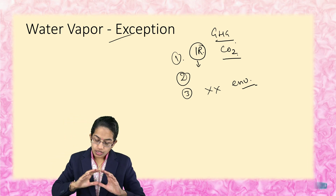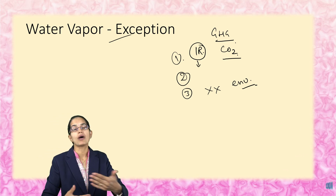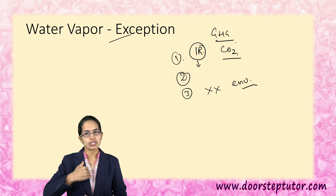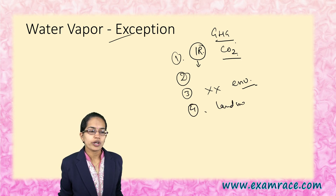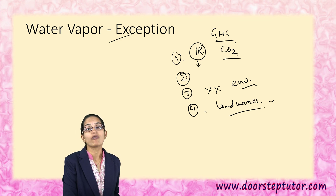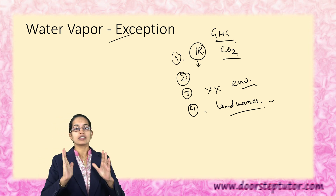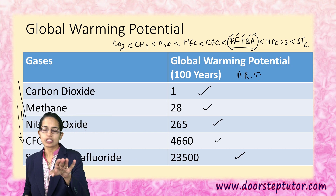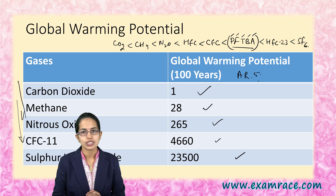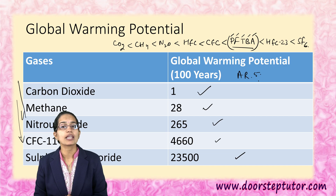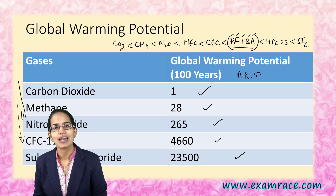The fourth reason is that the distribution of water vapor on the earth varies in the northern hemisphere and the southern hemisphere based on the differing amounts of land masses present. These are the four reasons why water vapor is an exception in global warming potential. This is a very burning topic, and most important questions fall from the series of global warming potential. We would be taking many more contemporary topics pertaining to competitive examinations, so stay subscribed. Have a wonderful day ahead.